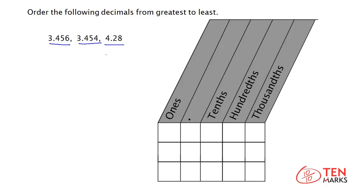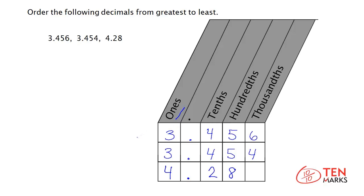Follow the same approach as in the earlier problems — look at each place value. Look at the ones place. We can see that the first two decimals have the same ones digit, which is 3. 4 and 28 hundredths, on the other hand, has a ones digit which equals 4. Since 4 is greater than 3, we can say that 4 and 28 hundredths is larger than the other two numbers.